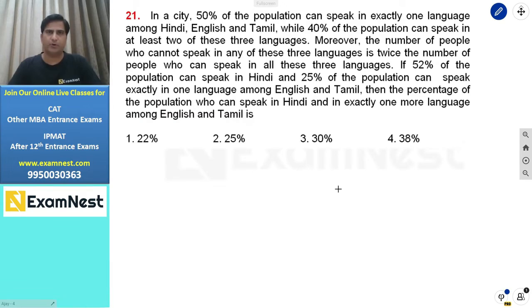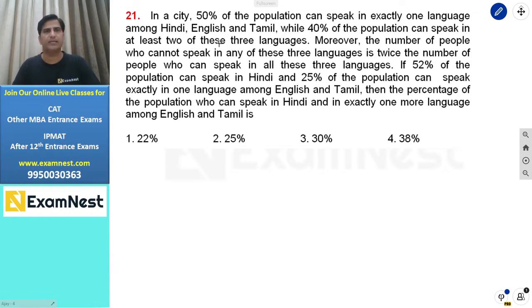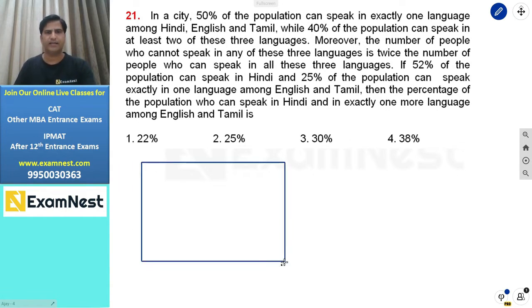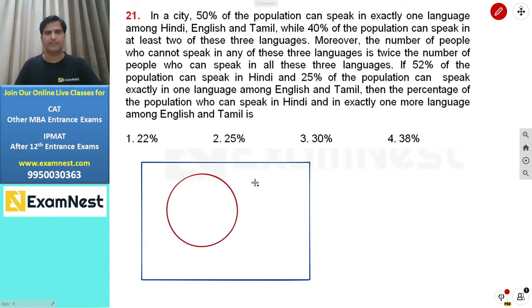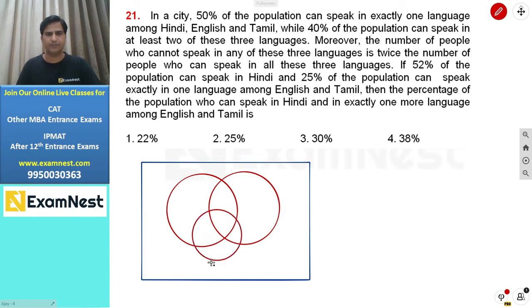This is a Set Theory based moderate level question: 'A city where 50% of the population can speak in exactly one language among Hindi, English and Tamil.' These three circles represent the three languages given in this question.